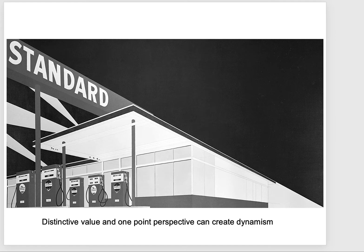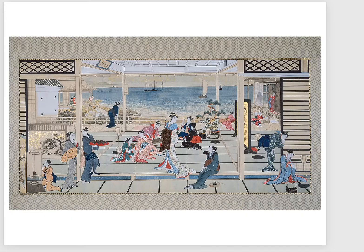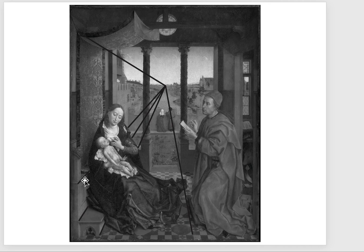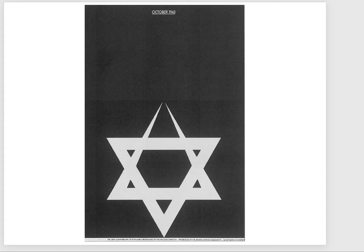Here we see an Ed Ruscha print, using linear perspective as a way to create a dynamic composition — a very hard, almost diagonal bisection of an image that reinforces the excitement of the picture plane. Then we have a standard high horizon line in this one, where we're playing with the spatial relationships between subject matter. And then we have a more traditional view of perspective in this Roger van der Weyden, St. Luke Drawing the Virgin and Child. The perspective in this van der Weyden image is pretty awkward; however, it is still correct as one-point perspective.